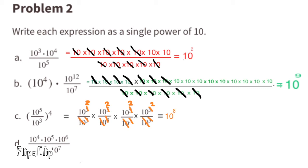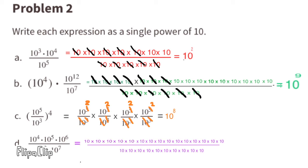For letter D, we have 10 times itself a total of 15 times on top and 10 times itself a total of 10 times on the bottom. All 10 on the bottom cancel out, and we take 10 away from 15 on top, leaving 10 times itself 5 times. 10 to the power of 5 over an imaginary 1 equals 10 to the power of 5.